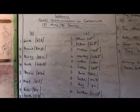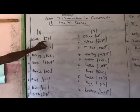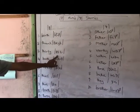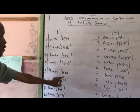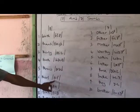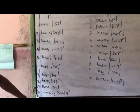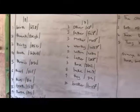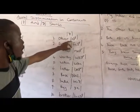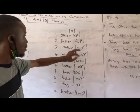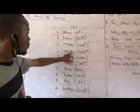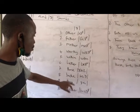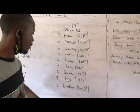Now let's pronounce the sounds in these words one more time. Voiceless sound: birth, thank, thirty, build, through, faith, teeth, three, something. Voiced sound: other, father, mother, worthy, within, leather, rose, they, brother.